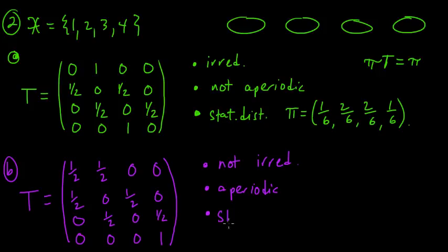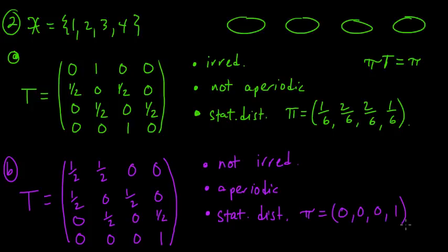It also has a stationary distribution, which is zero, zero, zero, one. You just write down the conditions and you can solve for that stationary distribution.